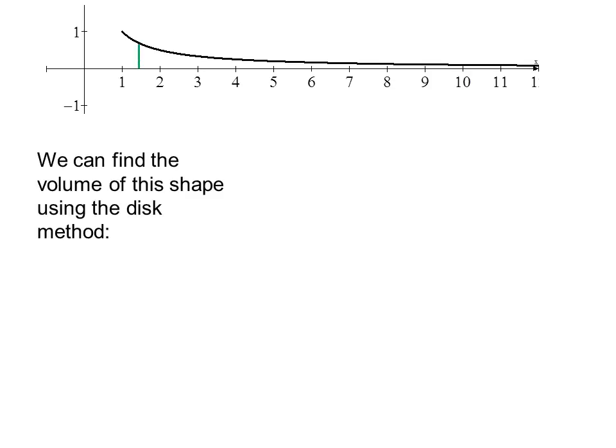We can find the volume of this shape using the disk method. We have the limit as b goes to infinity of pi times the integral from 1 to b of 1 over x squared dx, where 1 over x is the radius. We can rewrite this as the limit as b goes to infinity of pi times the integral from 1 to b of x to the negative 2 dx.